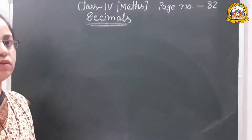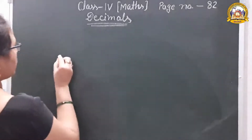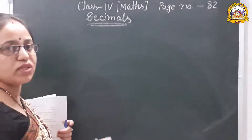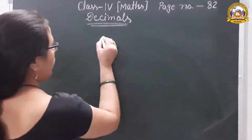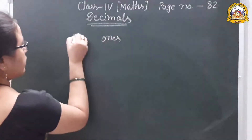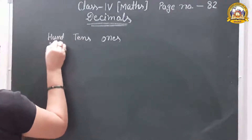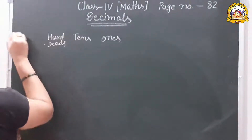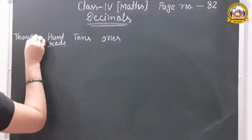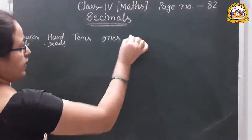Next: the place value chart of a decimal number. In the whole number part, you already know the place values: ones, tens, hundreds, and thousands. After the whole number, we put the decimal point.